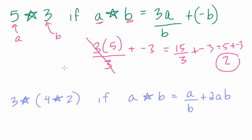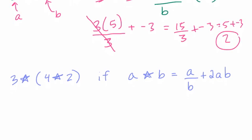We could have canceled this out right away and then just have 5 plus negative 3, because 3 divided by 3 is just 1. Now in the next problem, we have another star. However, they're defining it differently and we have more terms here.